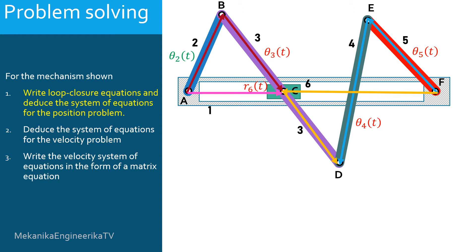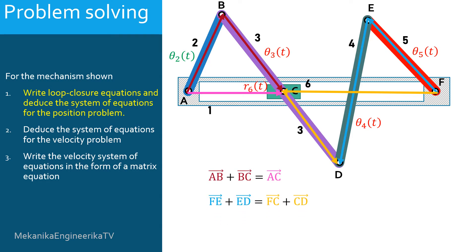Here we will use the 2 loop vector equations shown here. The first is: AB plus BC equals AC. And the second is: FE plus ED equals FC plus CD. Let's consider the loop vector equations one by one, separately.